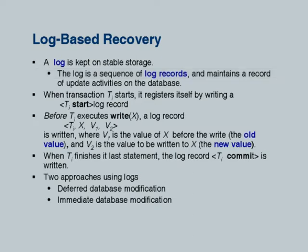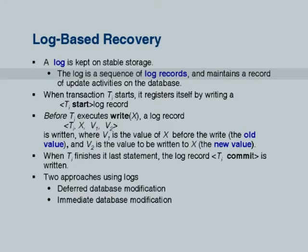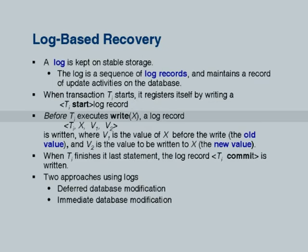What are the log records we are going to use? The first is a start transaction log record — when a transaction starts it outputs a Ti start. Whenever it issues a write to the database buffer, before the write it outputs a log record: Ti, the identifier of data item X, v1 (old value), and v2 (new value). If the transaction fails you have to undo its effects, and the only way to undo is if you have the old value v1. The recovery manager will use this log record to restore the value of X from v2 back to v1.